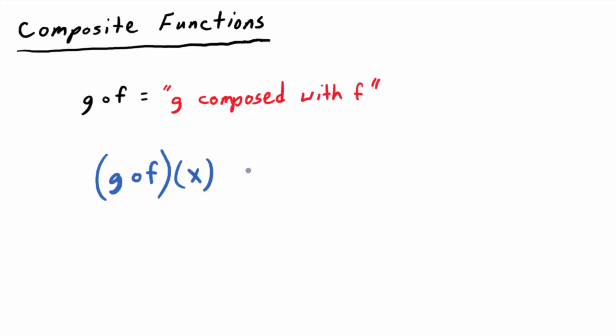And what it really means, by definition, is g of f of x. In other words, you're making the input for g, the input into the function g, you're making that input f of x. The formula for f of x usually is what that turns out to be. So it's a function of a function.